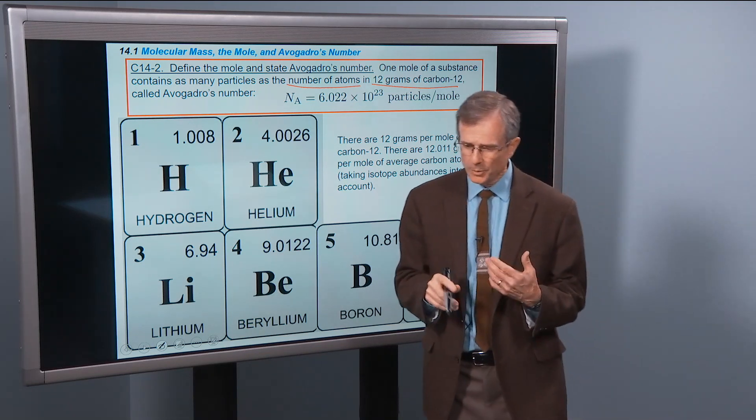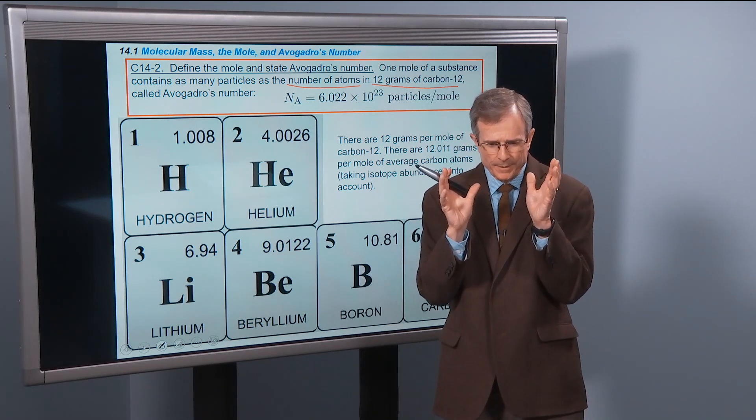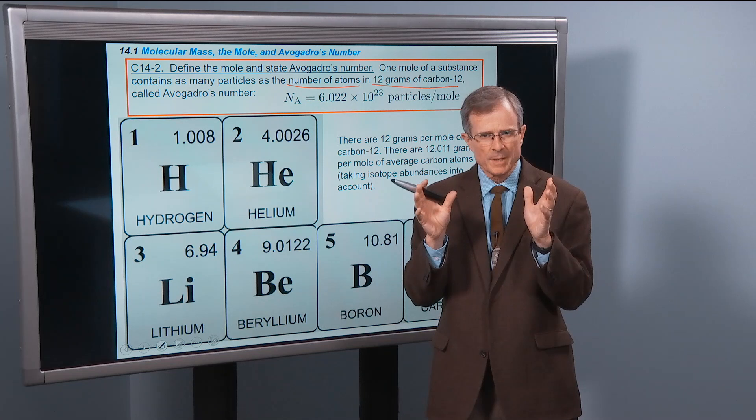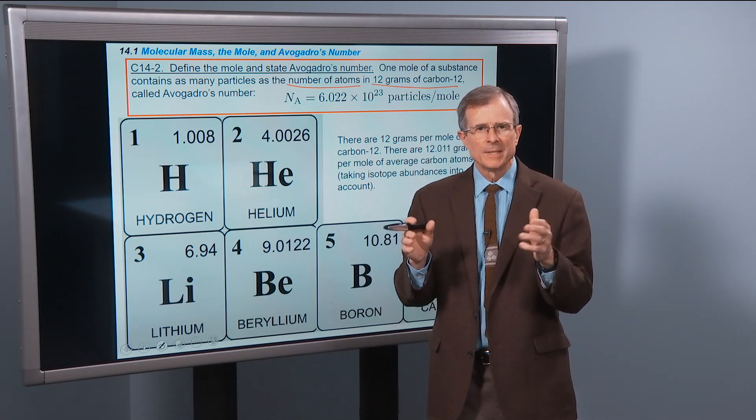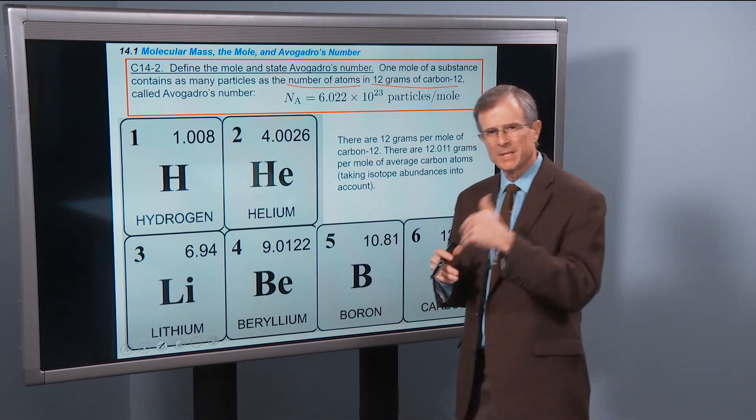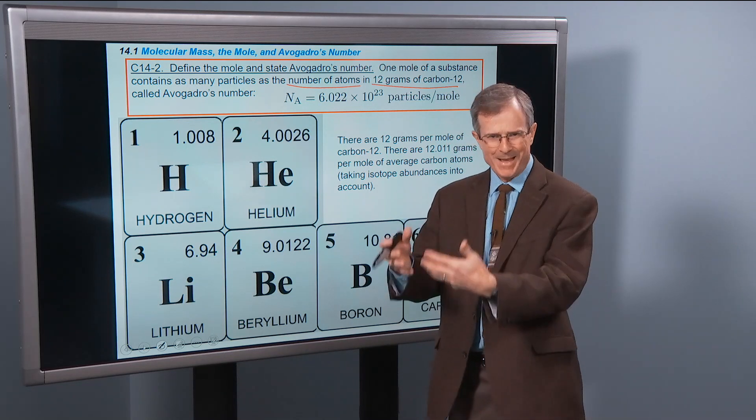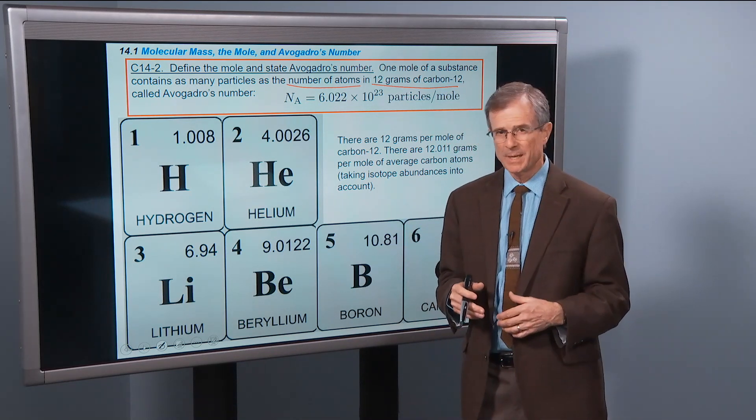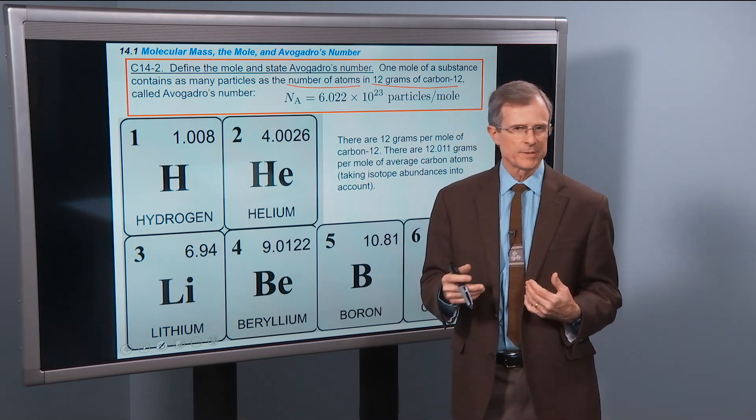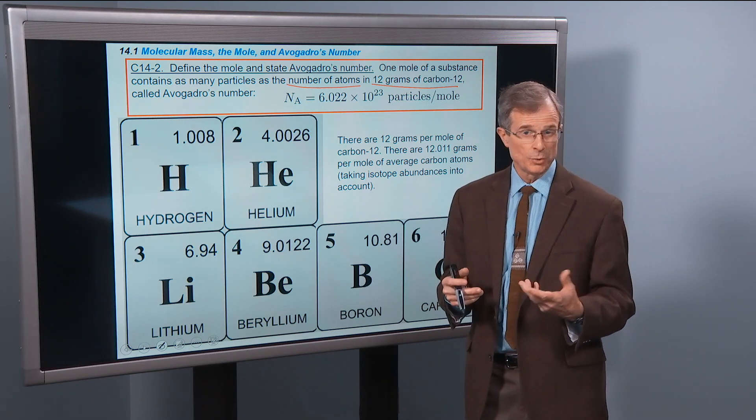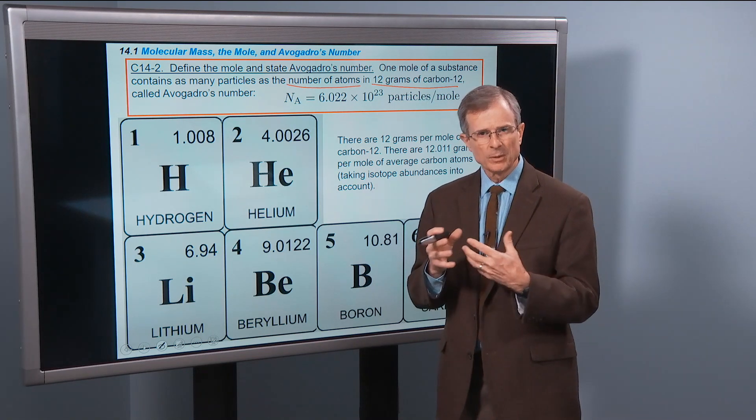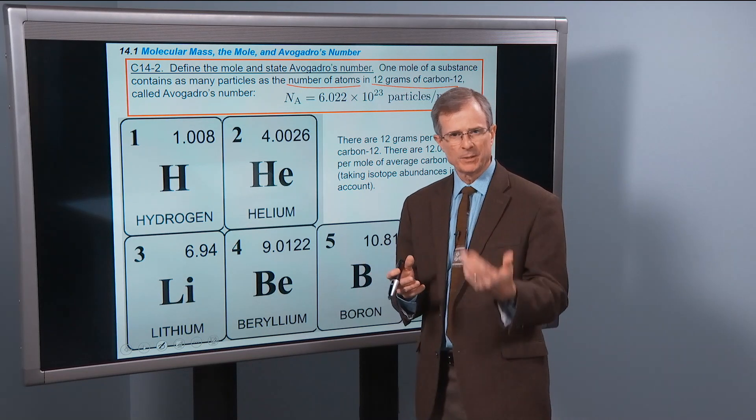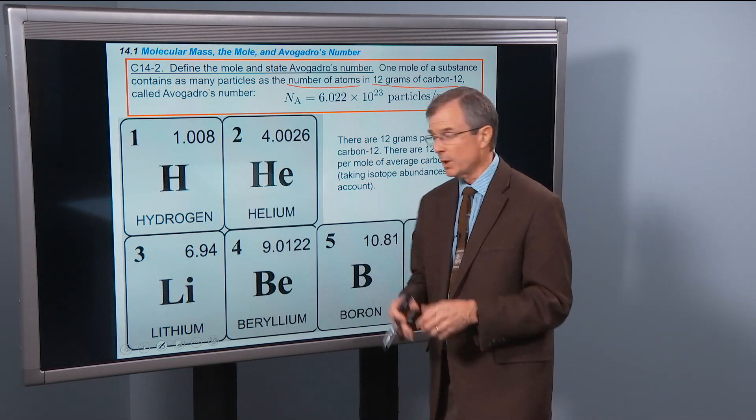Avogadro's number is 6.022 times 10 to the 23rd particles per mole. When we talk about one mole of a substance, we're always talking about 6.022 times 10 to the 23rd atoms, if it's carbon for example, or molecules if it's oxygen molecules. Particle is the general word we use to describe either atoms or molecules.